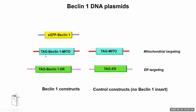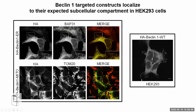I constructed Beclin-1 targeting constructs: we have a tag with Beclin-1 followed by a mitochondria targeting sequence, and in another case Beclin-1 followed by an ER targeting sequence. We also had Beclin-1 with no targeting sequence — the wild-type — and to be sure results were due to Beclin-1 itself, we had control constructs with the same tag and targeting sequence but no Beclin-1 insert.